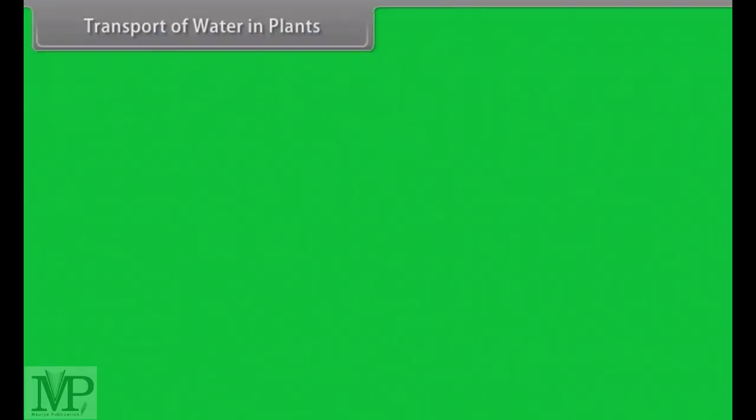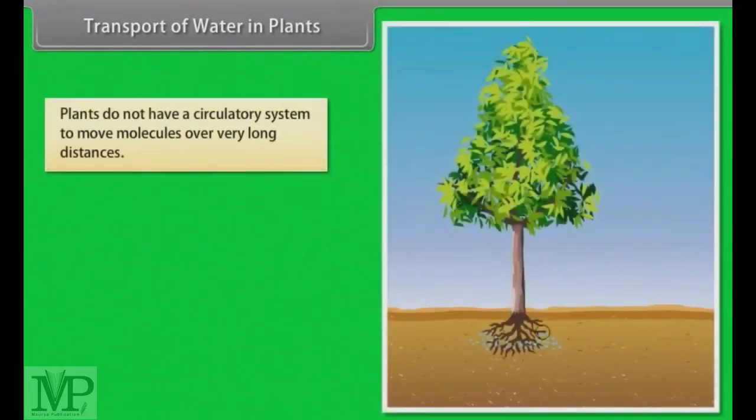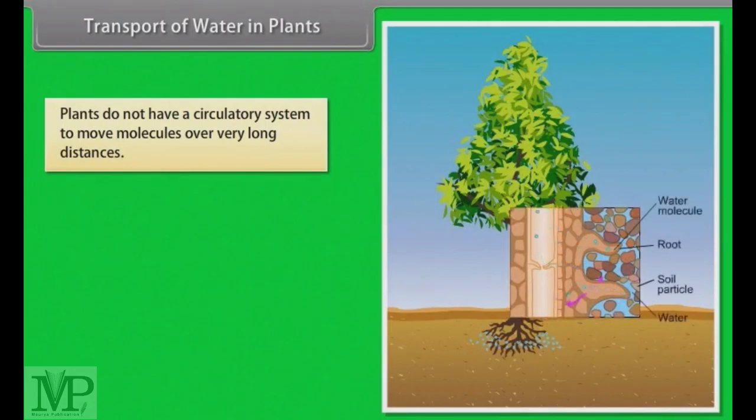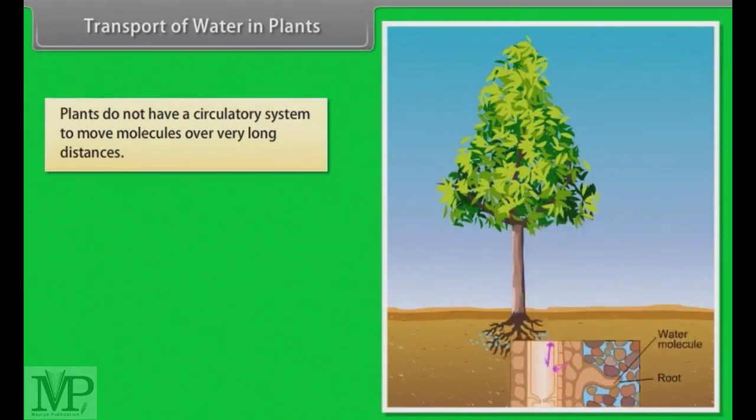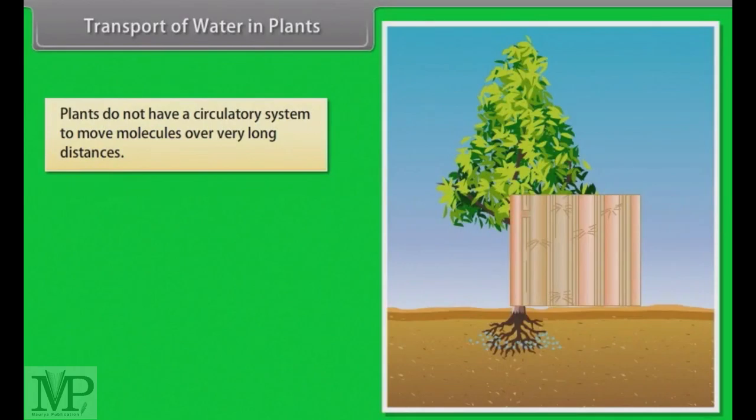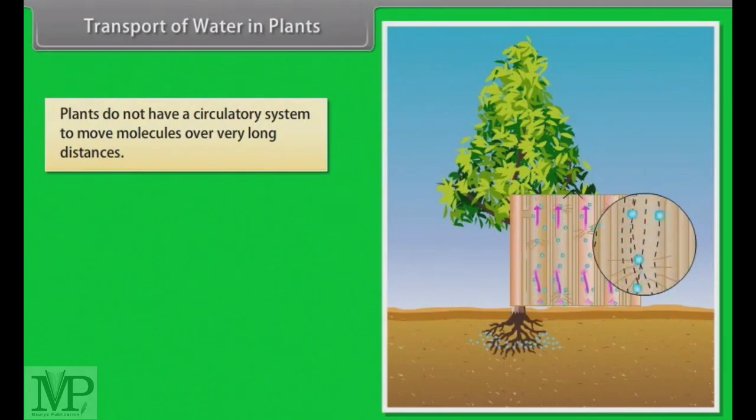Transport of water in plants. Introduction. All plants need to move molecules over very long distances. They also do not have a circulatory system in place. Water taken up by the roots has to reach all parts of the plant up to the very tip of the growing stem. The photosynthates or food synthesized by the leaves have also to be moved to all parts including the root tips embedded deep inside the soil.